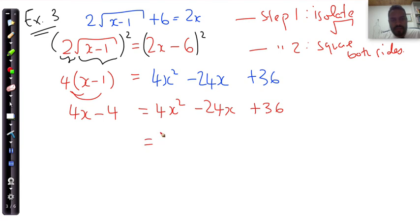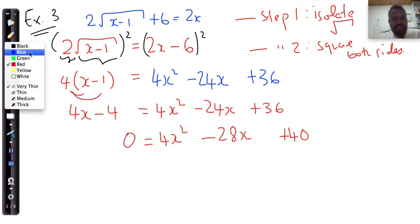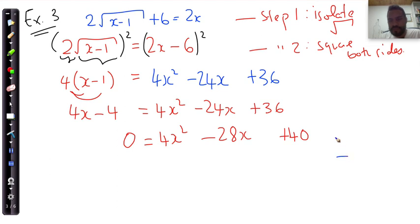Now I'm left with 4x squared over here. That negative 4 comes over, and that's going to give me positive 40, because 36 plus 4 is 40. Negative 24x minus 4x is negative 28x. So clearly 4 goes into everything there. I'm going to divide the entire equation by 4.